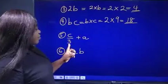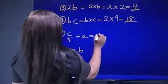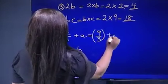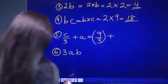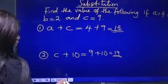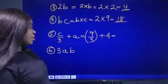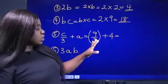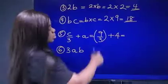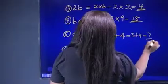What is c divided by 3, plus a? The value of c is 9, so that's 9 over 3, in brackets, plus a. The value of a is 4. If you've come across BODMAS, you deal with what is in the bracket first — that is, division before addition. So 9 divided by 3 is 3. Then 3 plus 4 equals 7.